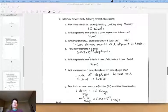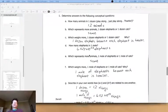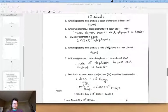How many elephants are in a mole of elephants? Well it doesn't matter that it's elephants. It's still 6.022 times 10 to the 23rd because a mole is Avogadro's number. A mole of things is Avogadro's number of things. Which represents more animals? A mole of elephants or a mole of cats? Same. Which weighs more? A mole of elephants or a mole of cats? The mole of elephants, because again each elephant is heavier.